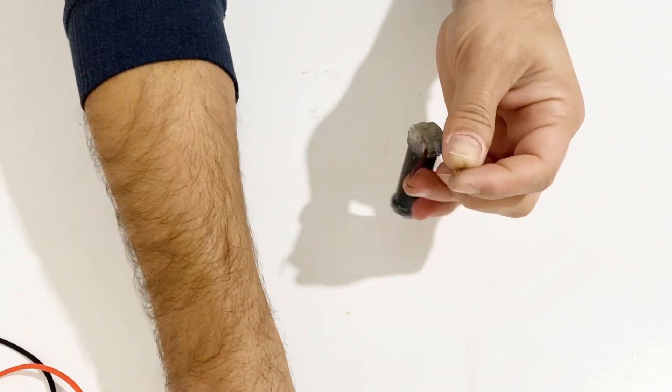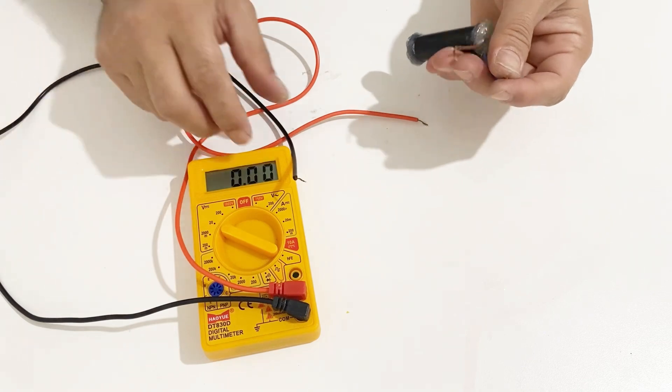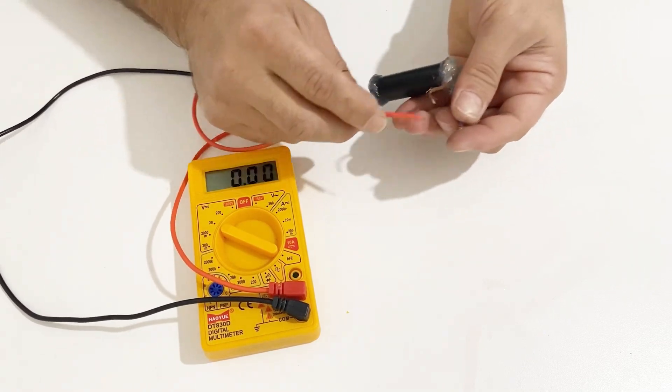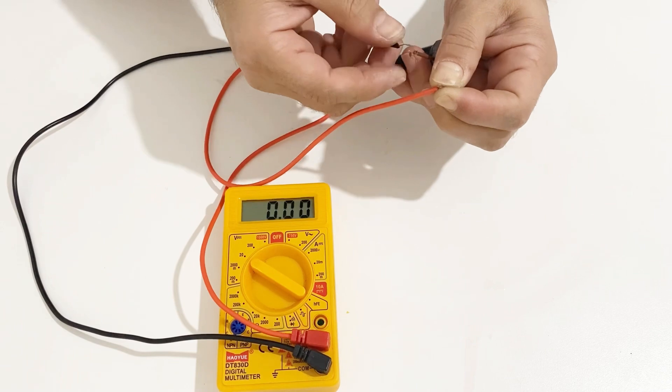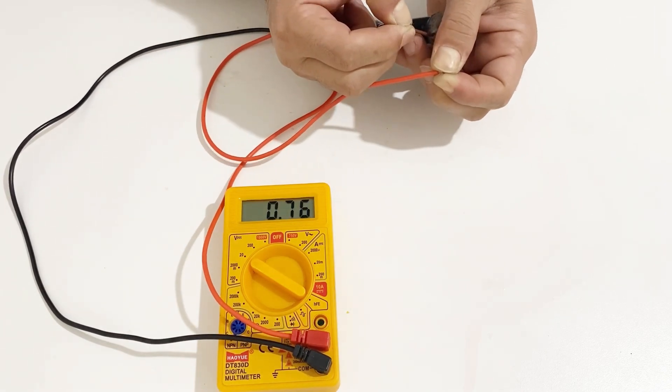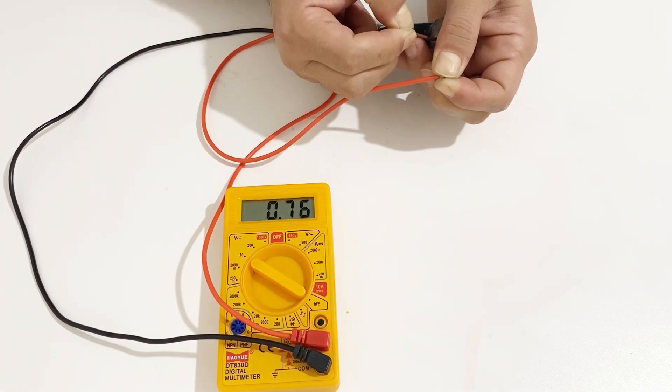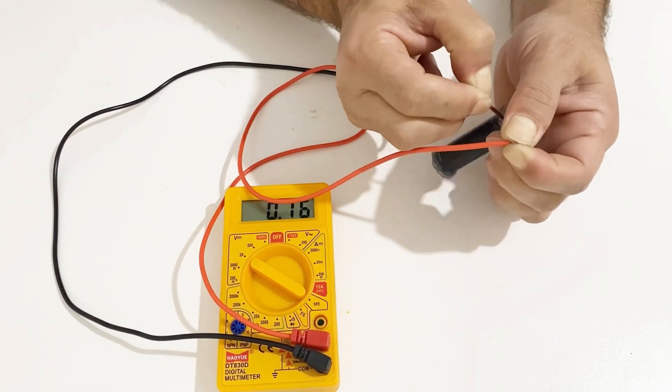Now after that, let's again measure the voltage inside it. It still has 0.76V inside it.